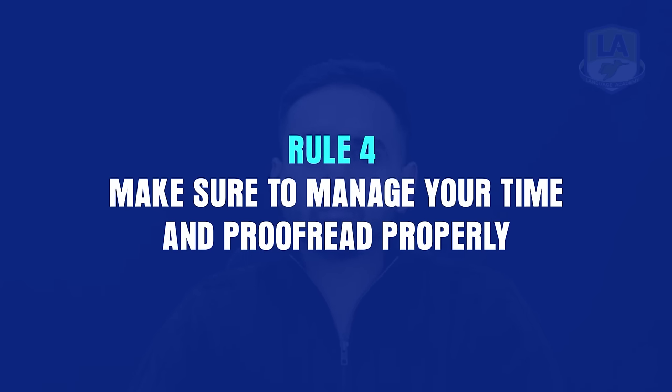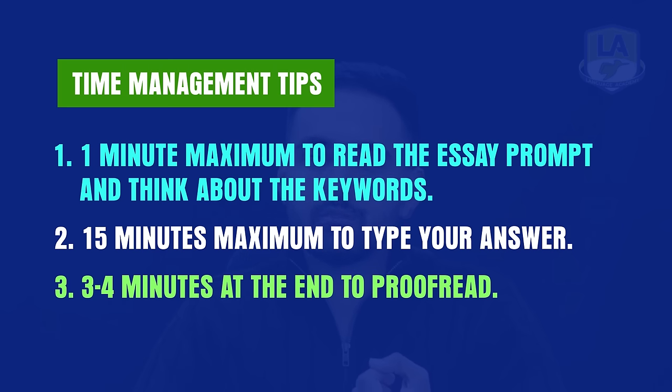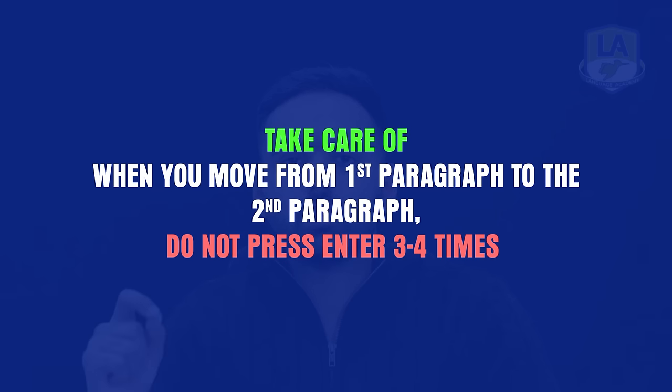Rule number four: manage your time and proofread properly at the end. You're given 20 minutes for one essay with no rollover time — if you finish in 15 to 17 minutes you won't get extra time in the next question. Use one minute maximum to read the essay prompt and think about keywords, the next 15 minutes maximum to type your answer, and the last three to four minutes to proofread. Proofreading is where you'll catch grammar and spelling mistakes, and five spelling errors can cost you a lot of points.